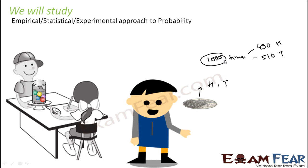We will talk about the formulas. But what I am trying to say is in this whole chapter, I will talk about the experimental approach to probability. It is also called statistical because some problems which we have solved in statistics, we will use the same problems to find out the probability.